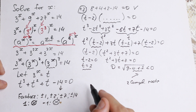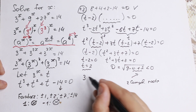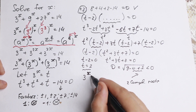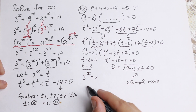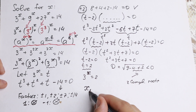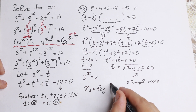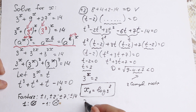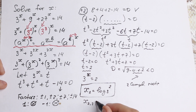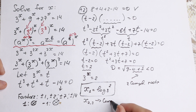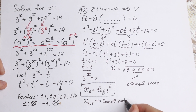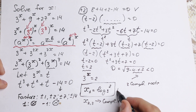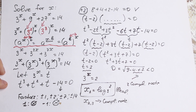We have t equals 2, so going back to our substitution, 3 to the x equals 2. Taking the log of both sides, x₁ equals log base 3 of 2. This is our one and only real root. x₂ and x₃ are complex roots coming from the quadratic factor with negative discriminant.